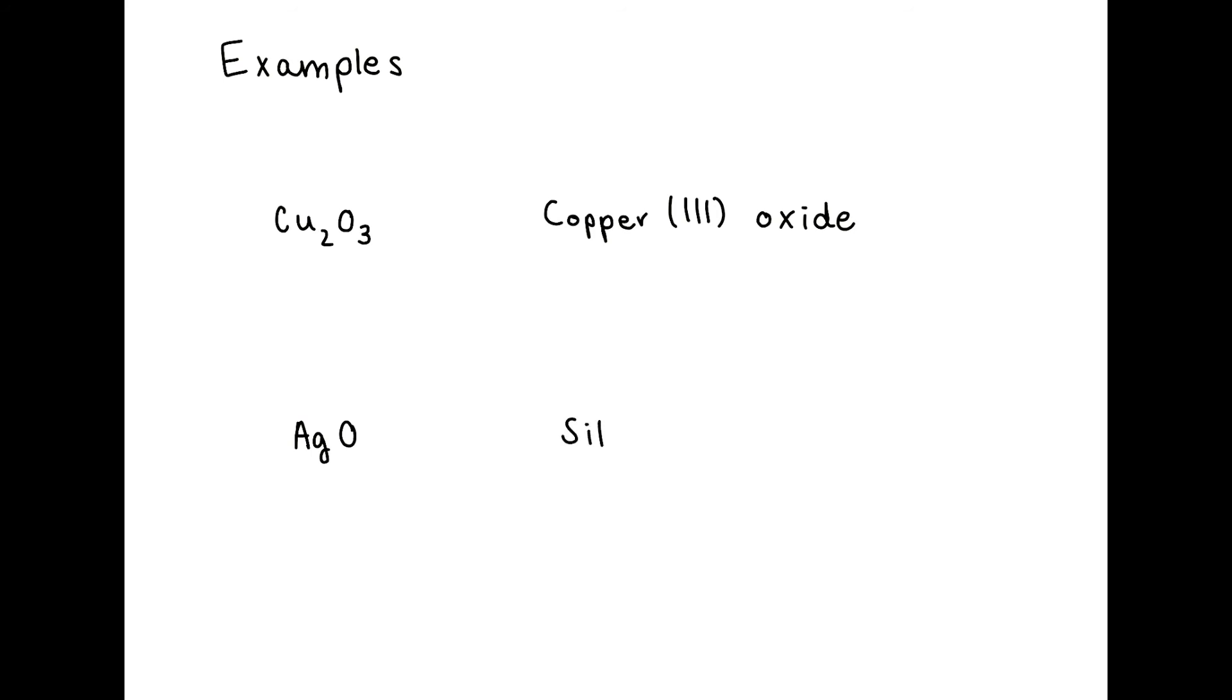The second metal is silver, and here we know that it has a two plus charge because it balances right nicely with oxygen, which has a two minus charge. So that's silver two oxide.